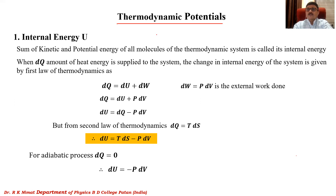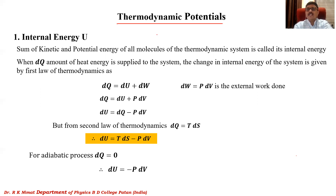These four variables are used to define the thermodynamic state of the thermodynamic system. However, to represent the complete state of a thermodynamic system, these four variables are not sufficient. We need to study certain functions which are functions of thermodynamic variables and use the first and second laws of thermodynamics. These functions are called thermodynamic potentials, and they completely describe the state of the thermodynamic system.